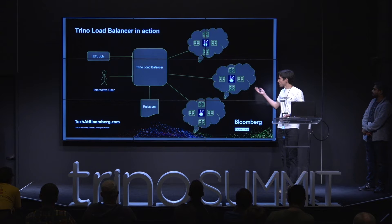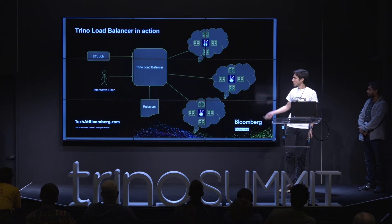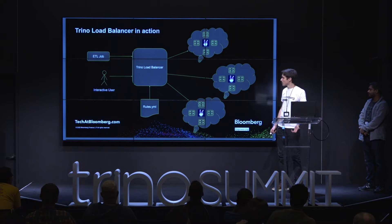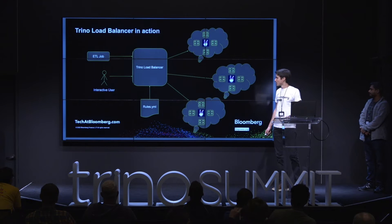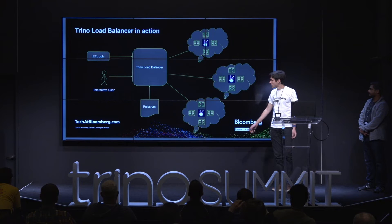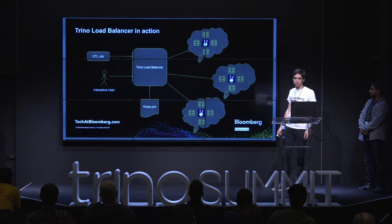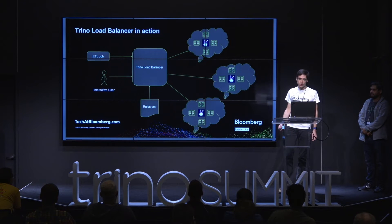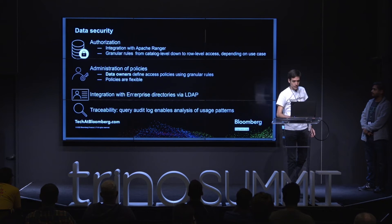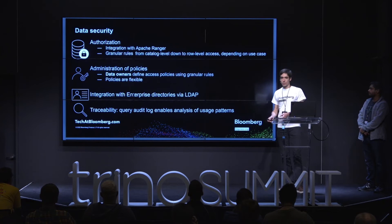To show an example of the architecture: you have an interactive user and an ETL job — a perfect example of a noisy neighbor using a lot of resources. They both talk to the same load balancer, which uses its rules and connectivity checks to determine which Trino cluster to route each request to.